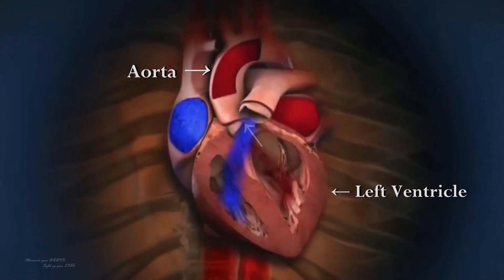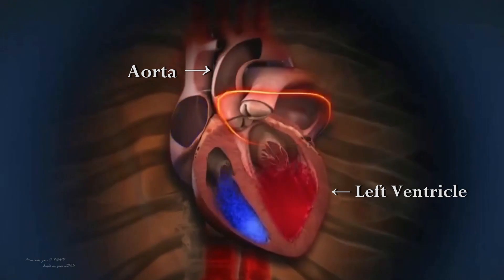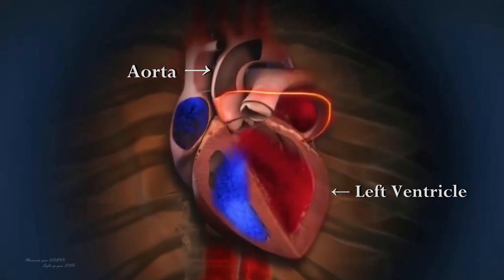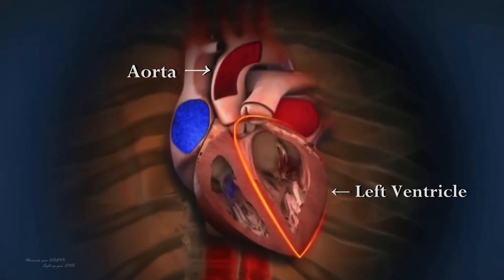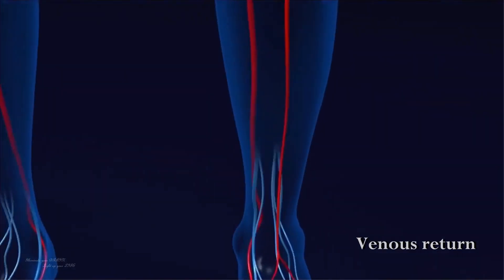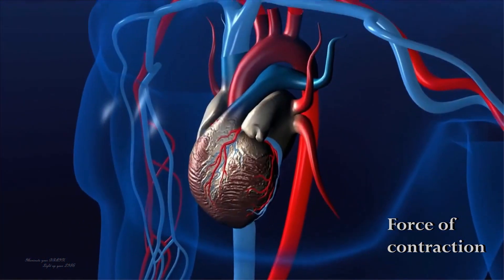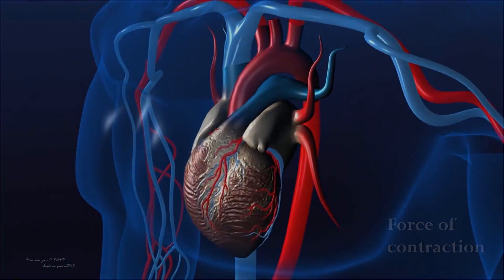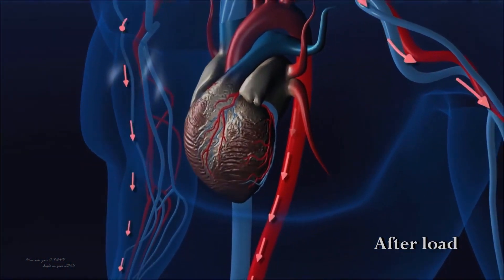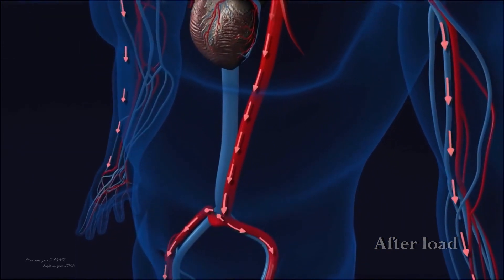Stroke volume is the amount of blood ejected by the left ventricle of the heart with each contraction. It is influenced by factors such as preload — the amount of blood returning to the heart — the force of contraction of the heart muscle, and afterload — the resistance against which the heart pumps blood.